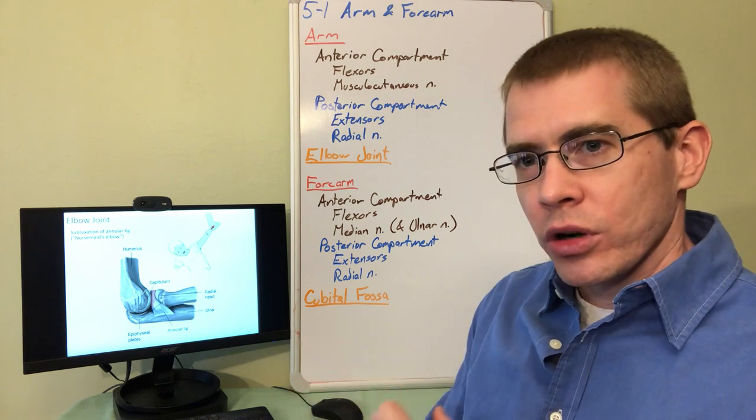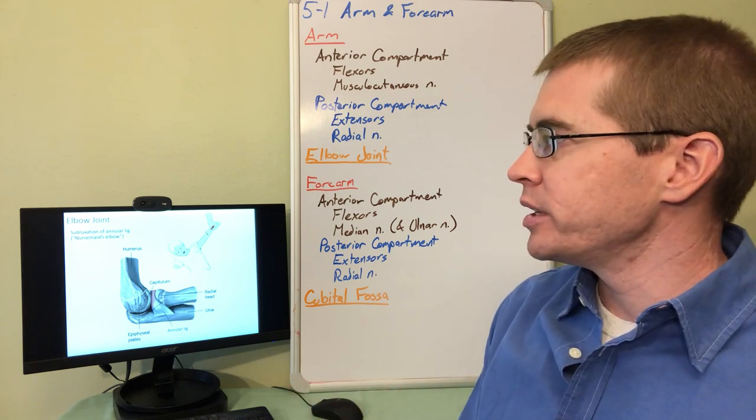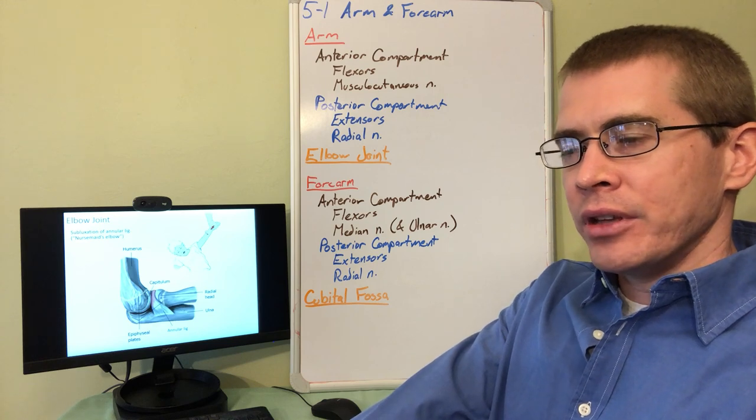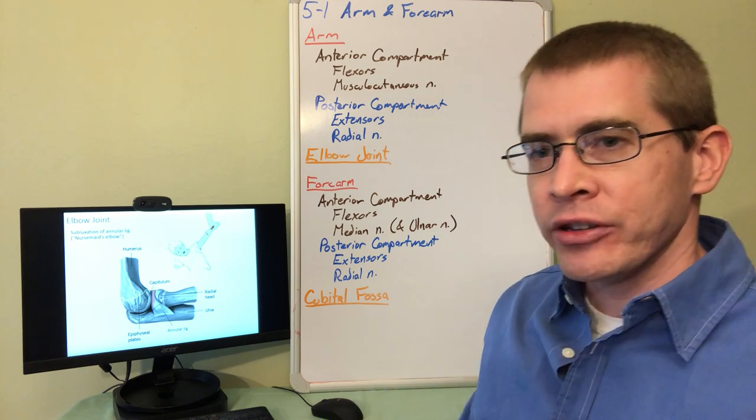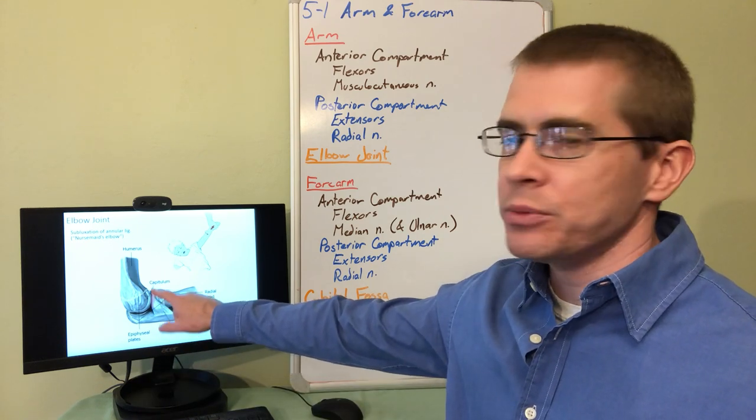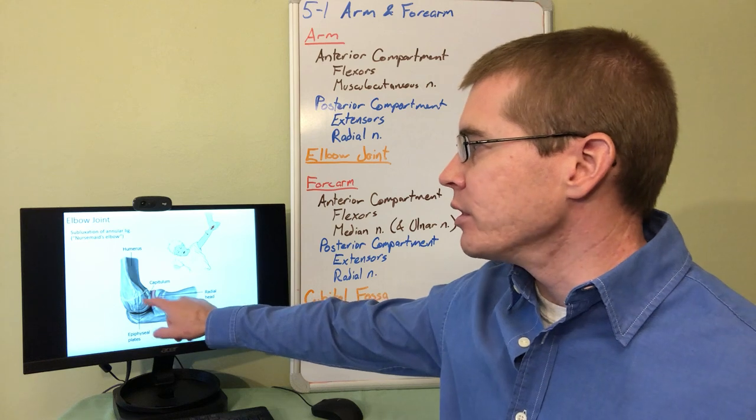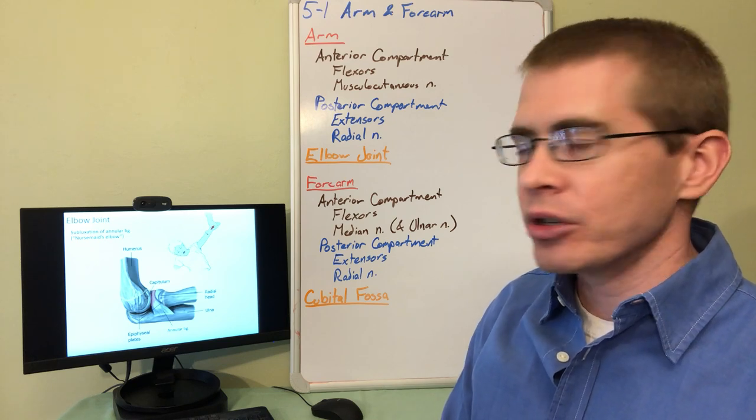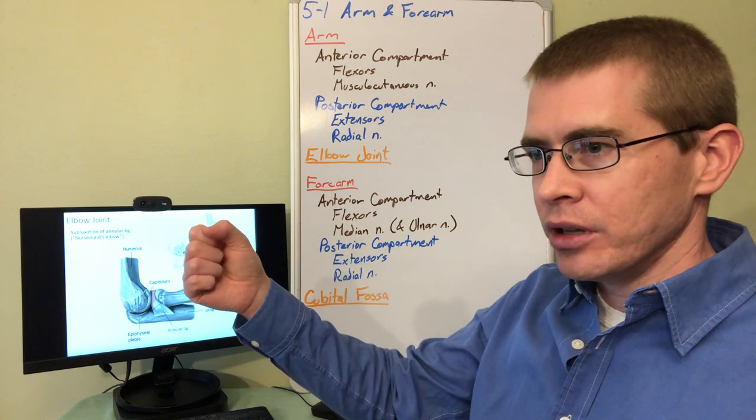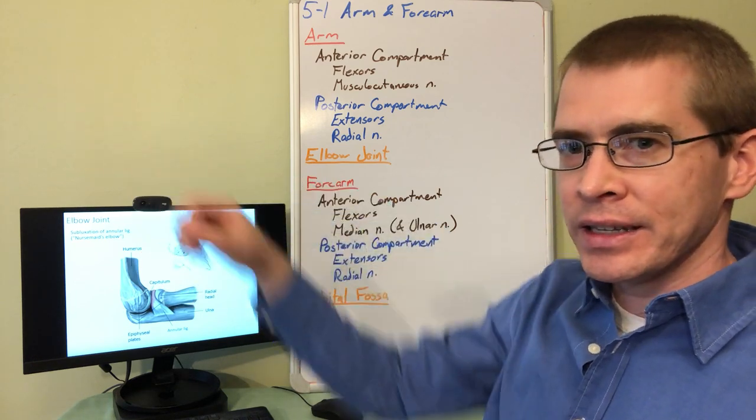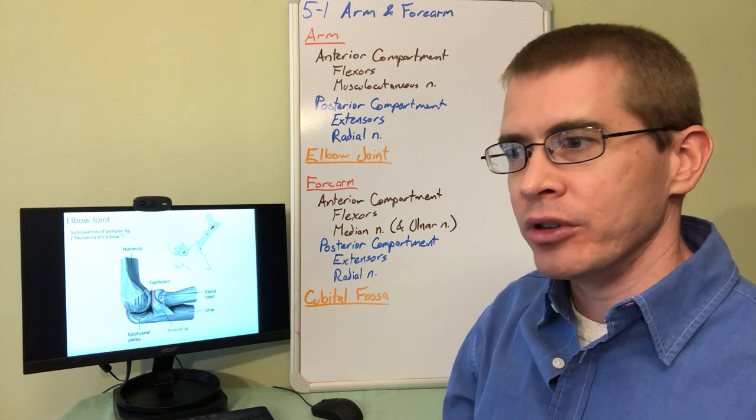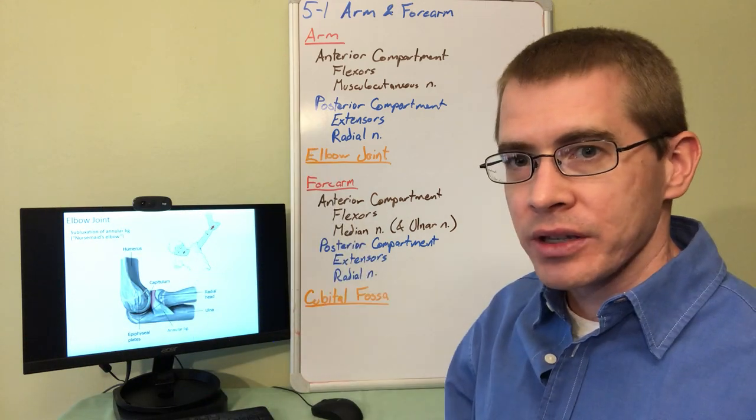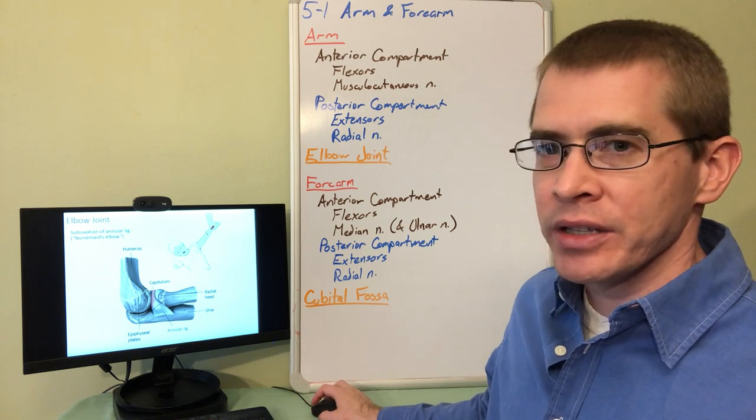So one clinical correlate to make note of here in relation to the annular ligament of the joint is that subluxation or movement of the head of the radius past that annular ligament means that that annular ligament is going to get trapped between the humerus and the head of the radius. And this is sometimes referred to as nursemaid's elbow. So it can occur when the forearm is rotated and extended, pulled away from the trunk. So that can happen in any number of instances like a kid falling out of a tree and grabbing a branch, things like that also cause of the nursemaid's elbow as it's referred.